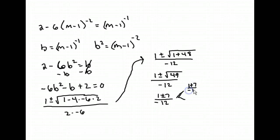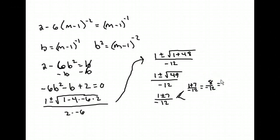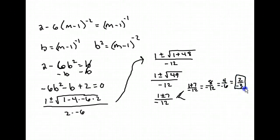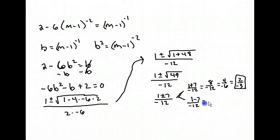That simplifies to 1 plus or minus 7 over negative 12. Our two answers are: 1 plus 7 over negative 12, which is 8 over negative 12, and reducing gives negative 2/3. The other answer is 1 minus 7 over negative 12, which comes out to negative 6 over negative 12, giving positive 1/2.